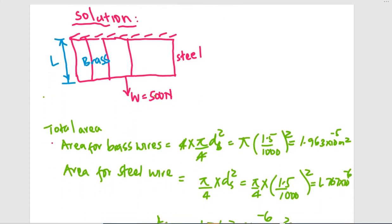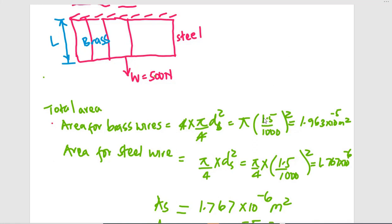Looking at this problem, let us give its solution. If we illustrate this system — four bars of brass and one of steel — this system carries a weight of 500 newtons. The total area for brass wires equals four times pi times the square of the diameter divided by four. Substituting the diameter of 2.5 mm (converted to meters) gives an area of 1.963 × 10⁻⁵ square meters.